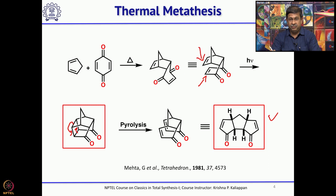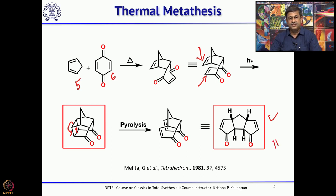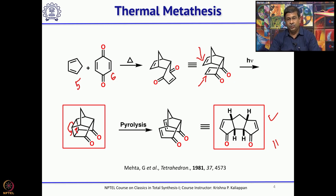The key takeaways from this sequence: first, thermal metathesis was used for the first time to get this tricyclic compound. Second, people often talk about atom economy — a buzzword of the last two decades. If you look at the whole transformation, you started with 5 plus 6 carbons, and in the product you have the same 11 carbon atoms, all hydrogen atoms, all oxygen atoms retained. So it is a 100% atom economy reaction over 3 steps, which this group exploited in total synthesis of many natural products.